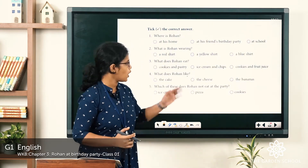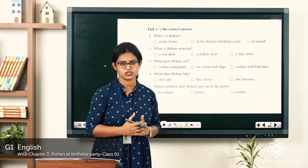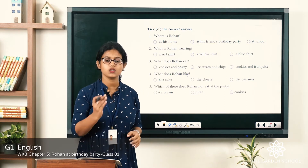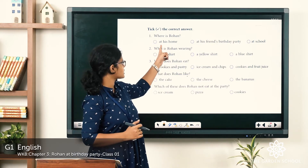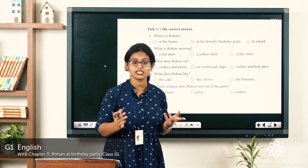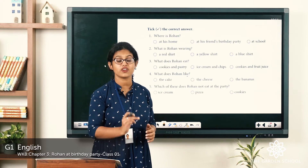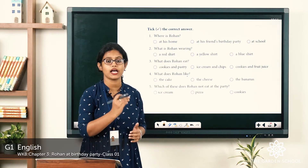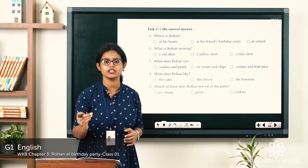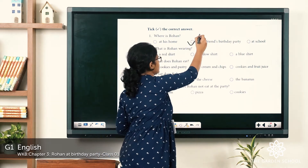Now we have some questions. Let's answer them. Question one: Where is Rohan? The three options are: at his home, at his friend's birthday party, or at school. The answer is his friend's birthday party — the passage clearly tells us he went for his friend's birthday party. His friend's name is Amit.